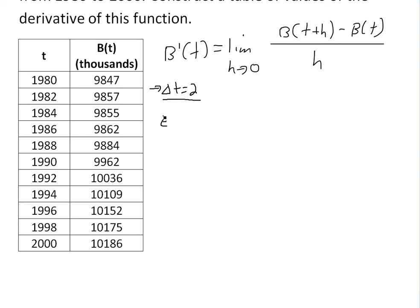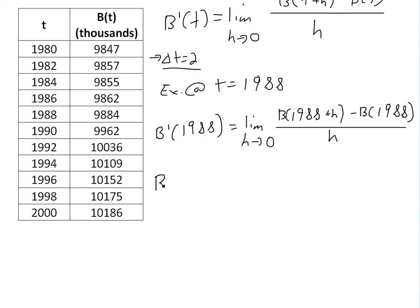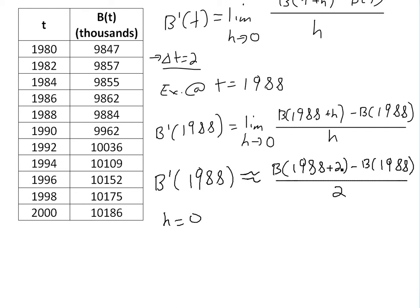For example, at T equals 1988, if we write out the definition of the derivative, we get the limit as H approaches 0 of [B(1988+H) minus B(1988)] divided by H. Since H is roughly equal to 2, we can say it's approximately [B(1990) minus B(1988)] divided by 2. This is called the forward difference.